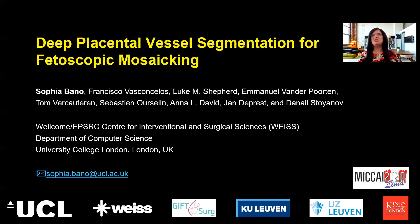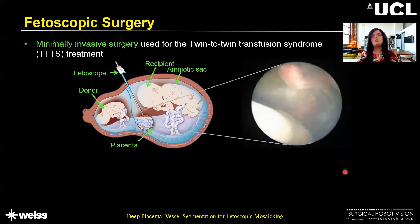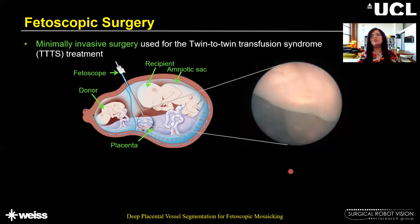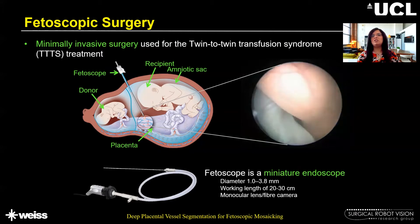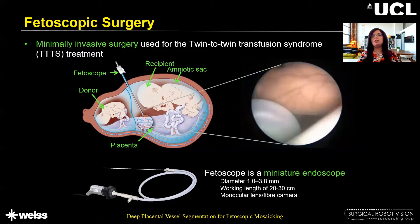Welcome to my talk on placental vessel segmentation for fetoscopic mosaicing. My name is Sophia Bano and I am from the Wellcome EPSRC Centre for Interventional and Surgical Sciences, University College London. Fetoscopy is a minimally invasive surgery used for the treatment of twin-to-twin transfusion syndrome. Here you can see the typical view that surgeons see during the fetoscopic procedure, which has very limited field of view. The fetoscope is a type of endoscope with a much smaller form factor and a working length of about 20 to 30 centimeters with a monocular camera on it.